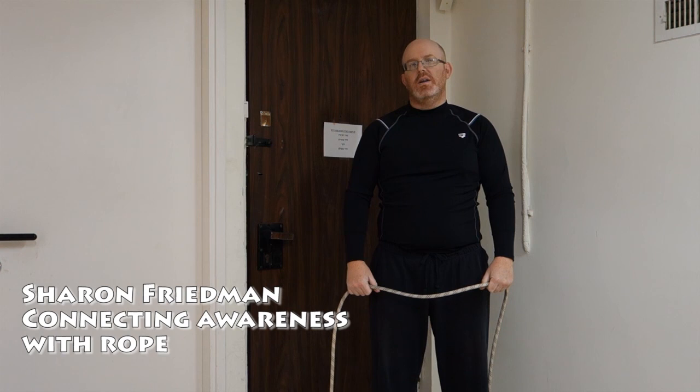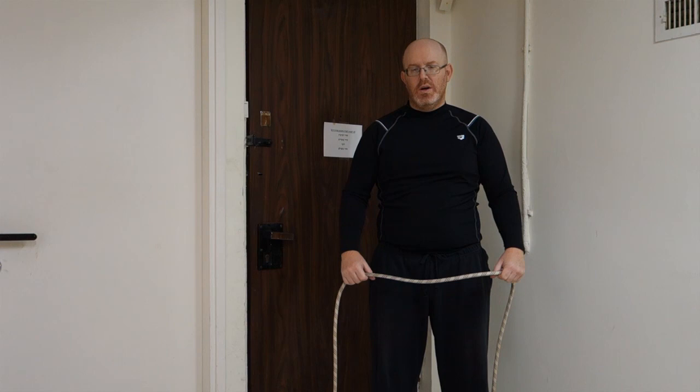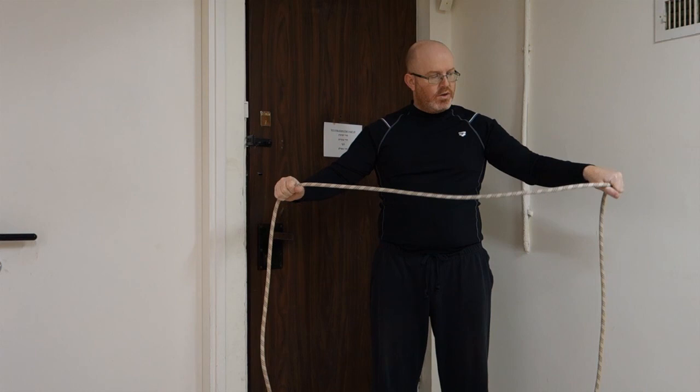Hello, today we're going to do a rope mobility exercise to connect the awareness and tension between the two shoulders, arms, and torso. We start with the rope held in both hands. What I'm doing is circling one wrist with the resistance of the other.